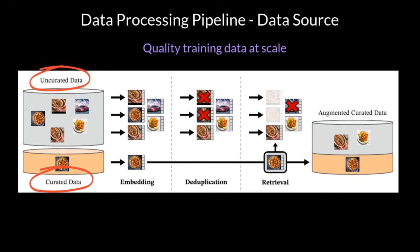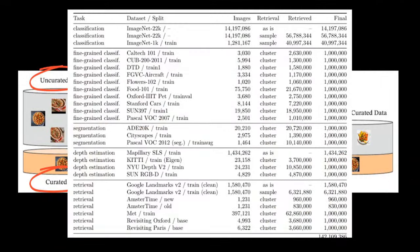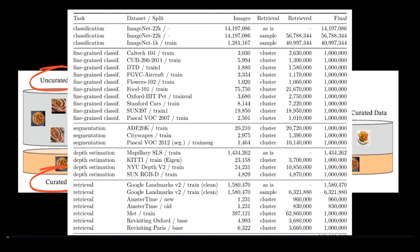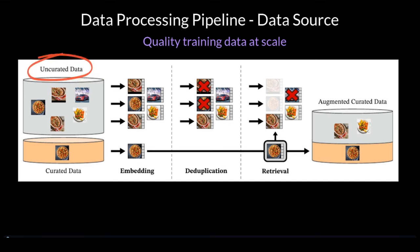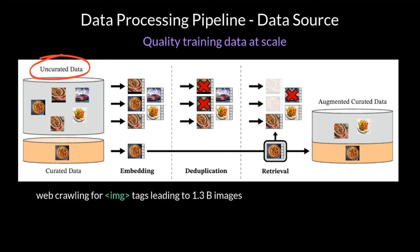The curated dataset, as the name implies, is built by combining pre-existing standard datasets. This table shows all the pre-existing standard datasets that have been used to form the curated dataset. The source tasks are classification, fine-grained classification, depth estimation, and image segmentation. The uncurated dataset was gathered by web crawling for image tags and consists of raw data.